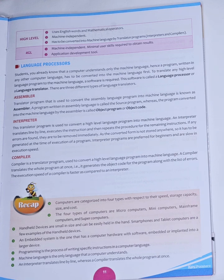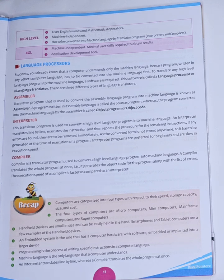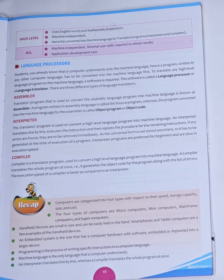The third type of language translator is compiler. Compiler is a translator program which is used to convert a high-level language program into machine language program. The difference between compiler and interpreter is that interpreter translates the program line by line, whereas compiler translates the whole program at once. Once the program is compiled, it will generate the object code for that program, along with a list of errors. The execution speed of the compiler is faster as compared to the interpreter.